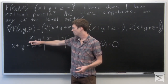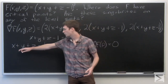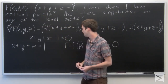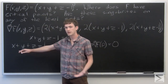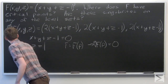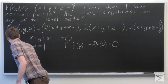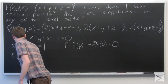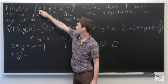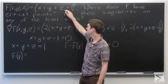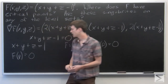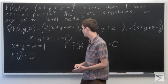We'll look at points on this plane, x plus y plus z equals 1. If we figure out what f(p) is, and if p is on the plane, then f(p) satisfies x plus y plus z minus 1 equals 0. So we're looking at the level set where f is equal to 0.